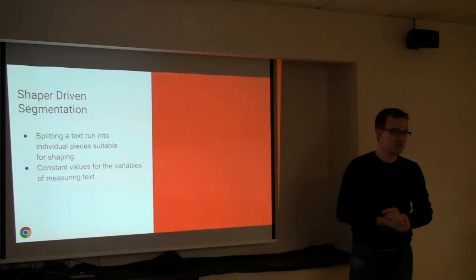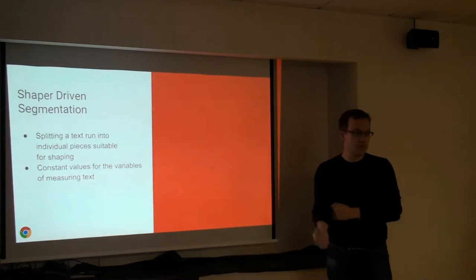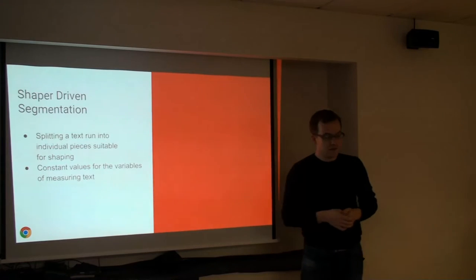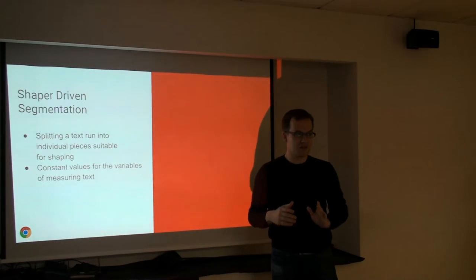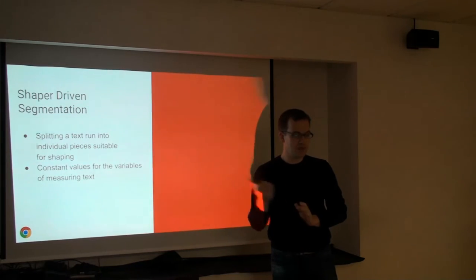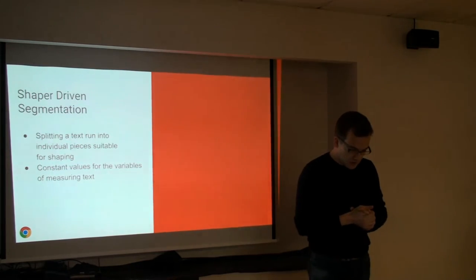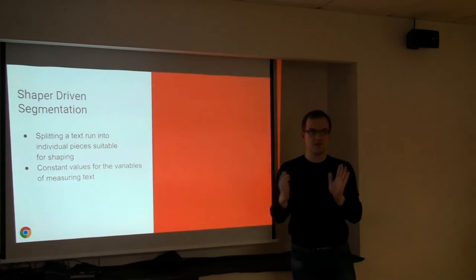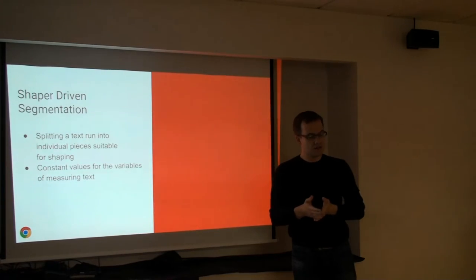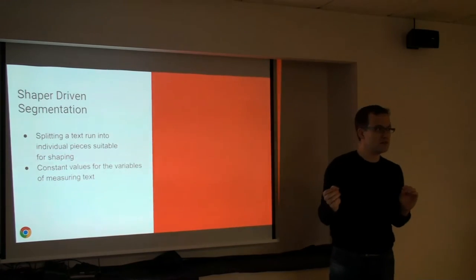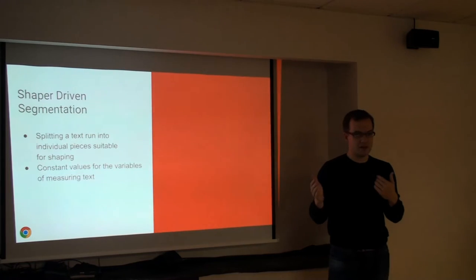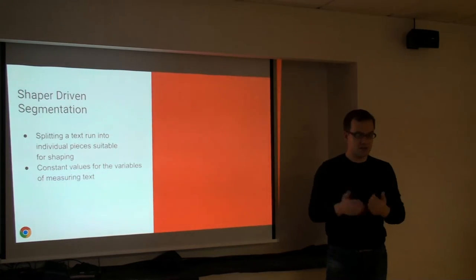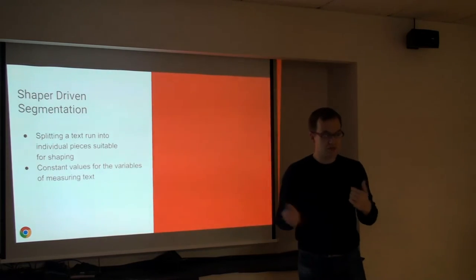Shaper-driven segmentation: segmentation is a process that needs to happen before you can hand a piece of text to the shaper. Because of the formula we saw at the beginning, you can only shape a piece of text when the font, size, features, script, language, and context are all constant. The shaper cannot handle multiple values of these simultaneously, so you need to break text into sub-pieces where all these variables are constant. This is text segmentation.